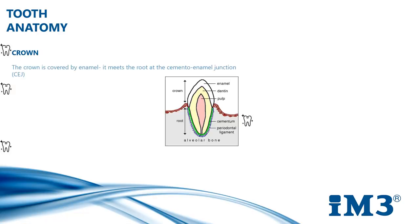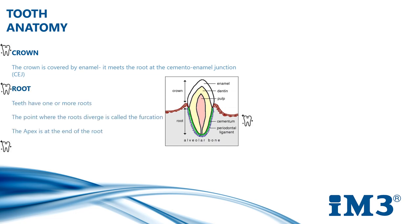The crown is covered by enamel. It meets the root at the cemento-enamel junction, referred to as the CEJ. Anatomically, the CEJ is the neck of the tooth that is not normally visible.